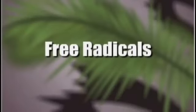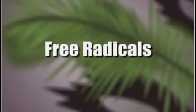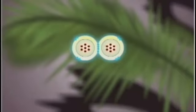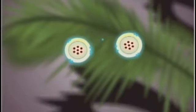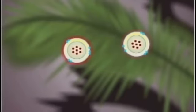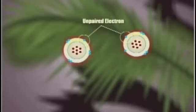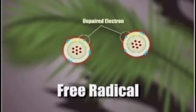Our bodies are comprised of billions of molecular cells held together by electronic bonds. Sometimes these molecules are held together by a weak bond and can split apart, resulting in an unstable molecule with an unpaired electron. This molecule is known as a free radical.